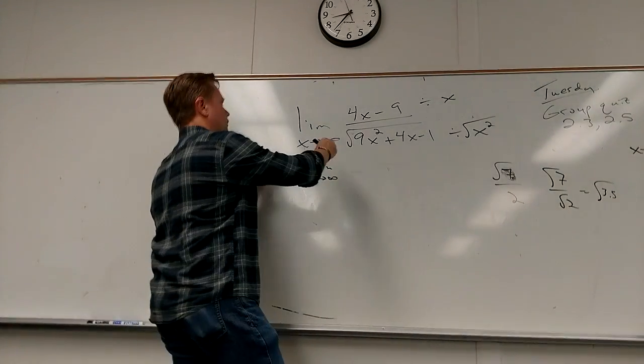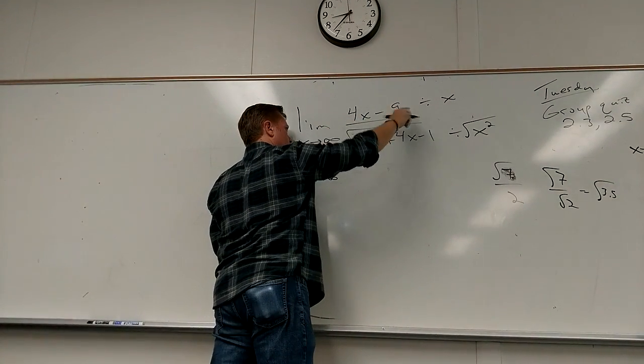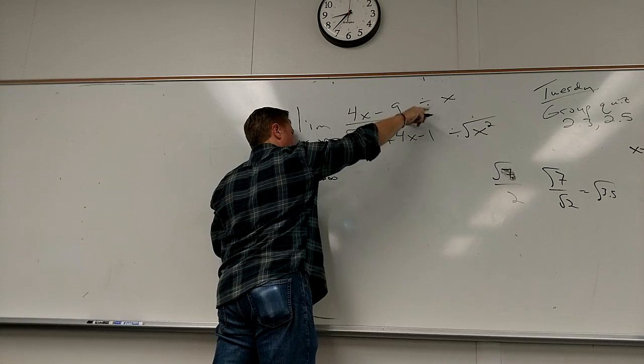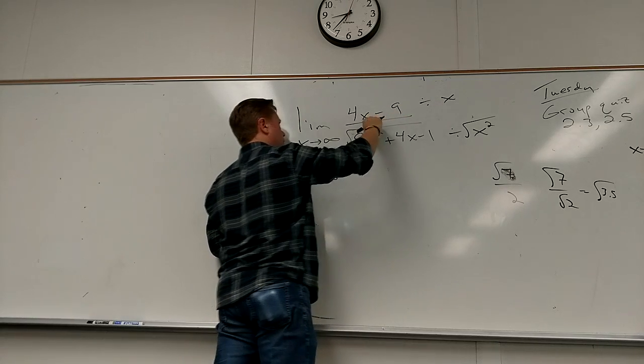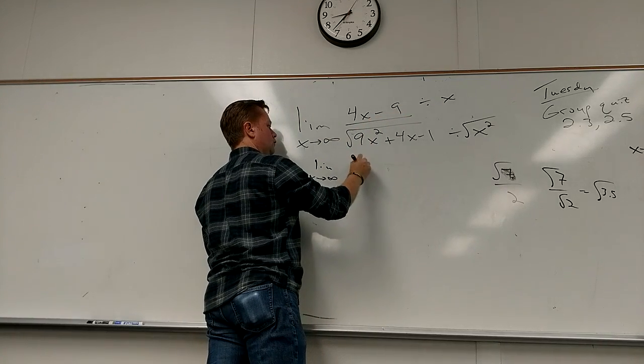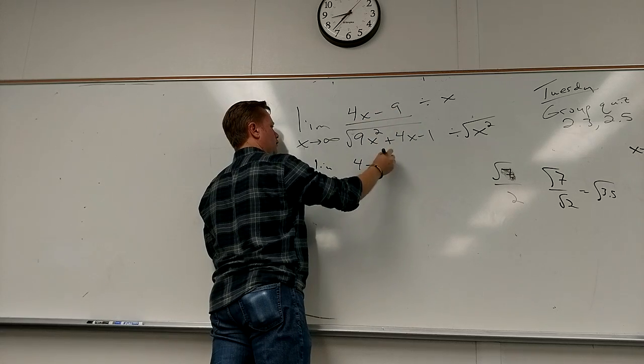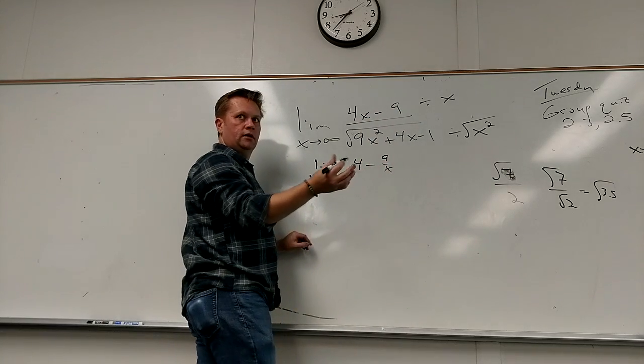All right, so end of union break. What do I got on the top? Divide by x. What do I get? Four. Nine over x. So all I'm doing is dividing by x.